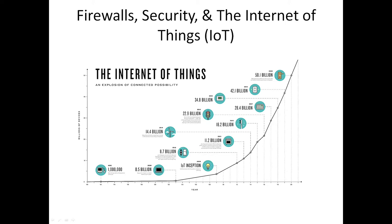The internet of things is a new digital frontier, and much like the old wild west, it has many unknowns and risks. This picture shows where IoT is anticipated to go. Back in 1992 there were about a million computers online; by 2003 there were half a billion. 2009 is when IoT — the internet of things, which I'll use for the rest of this talk — came about.